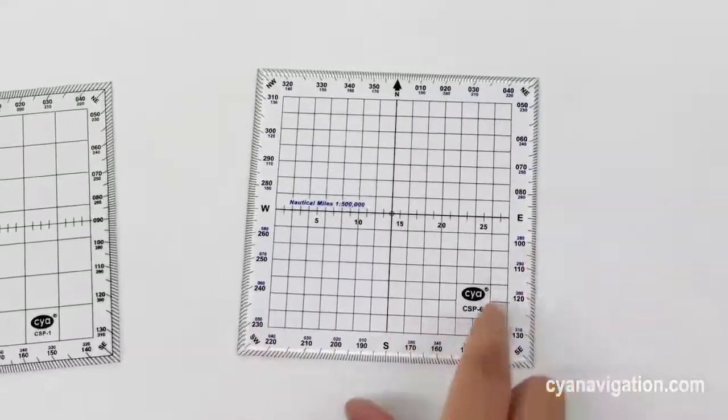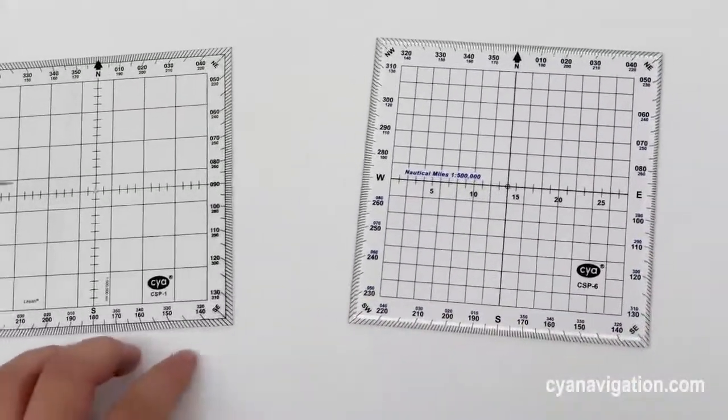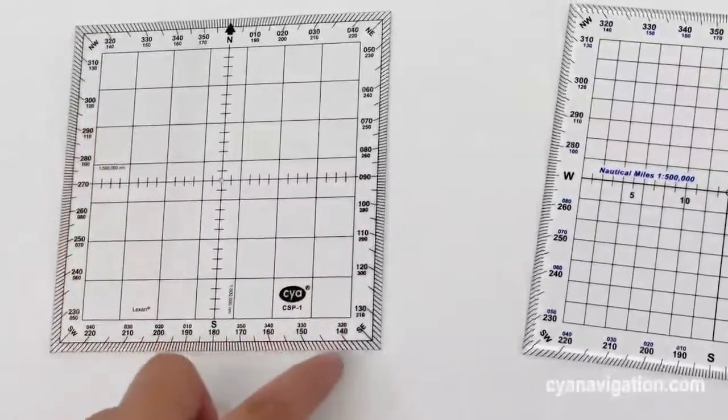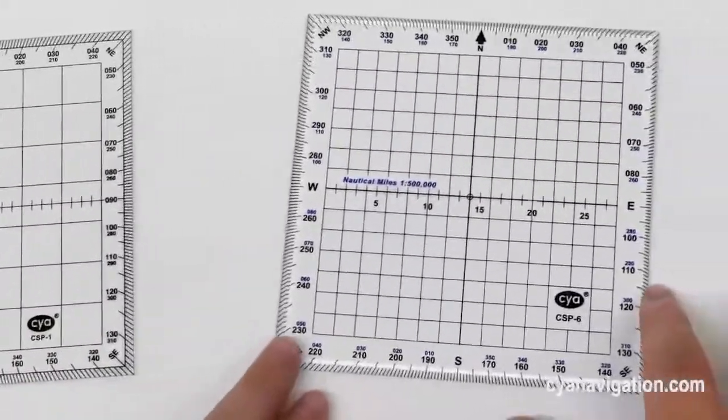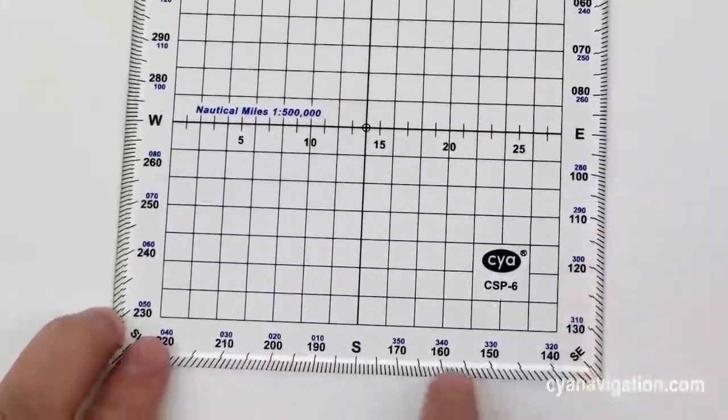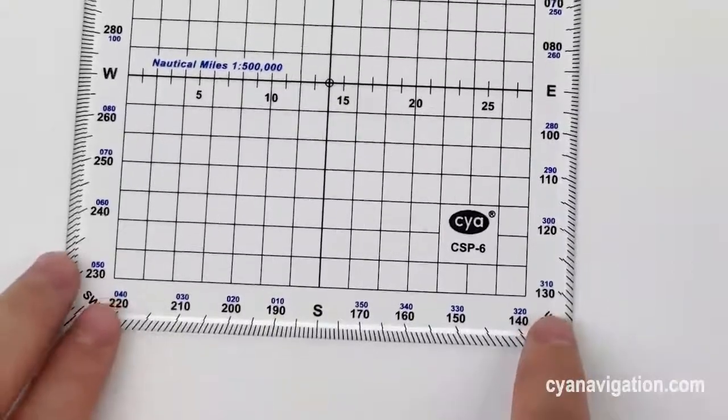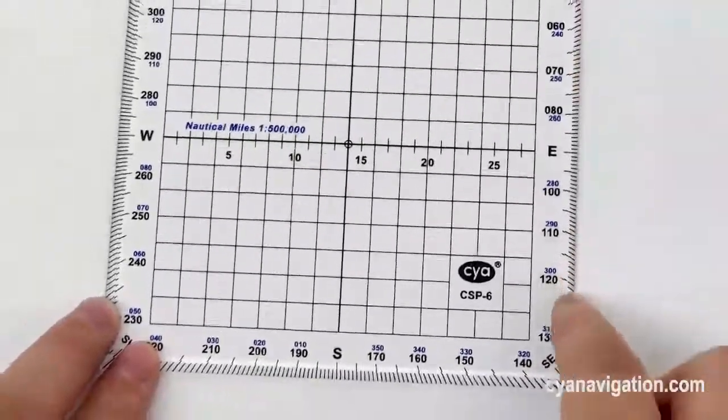Another difference is we print this protractor with all black markings. All these numbers are black, but this one is not only with black numbers but also blue reciprocal markings for quicker and easier measurement.